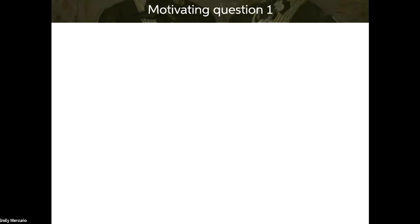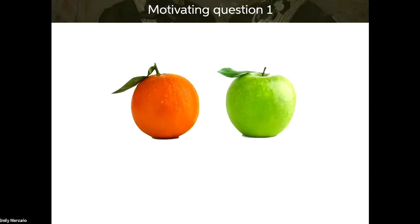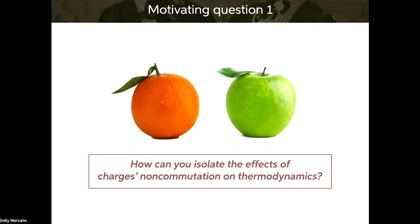Where do we come in? We had at least two motivating questions. The first is: are we comparing apples to apples when studying the physics of non-commuting charges? Say I have some system and I want to see how introducing non-commuting charges changes the physics. Non-commuting charges aren't just a switch you can flip on — maybe I'm introducing other things causing the changes I'm attributing to non-commuting charges. So the first question is: how can we isolate for the effects of charges' non-commutation on thermodynamics?